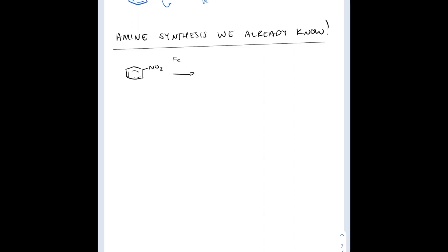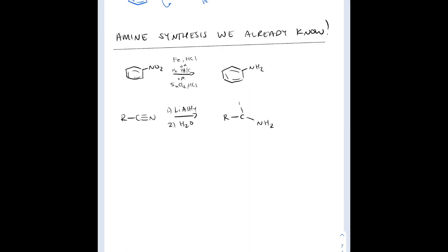Some amine syntheses we already know: reduction of nitrobenzene with iron and acid, H2 and palladium on carbon, or tin chloride and acid — these give aniline. Reduction of a nitrile group with lithium aluminum hydride gives you the amine. Reduction of an amide with lithium aluminum hydride also gives you an amine.